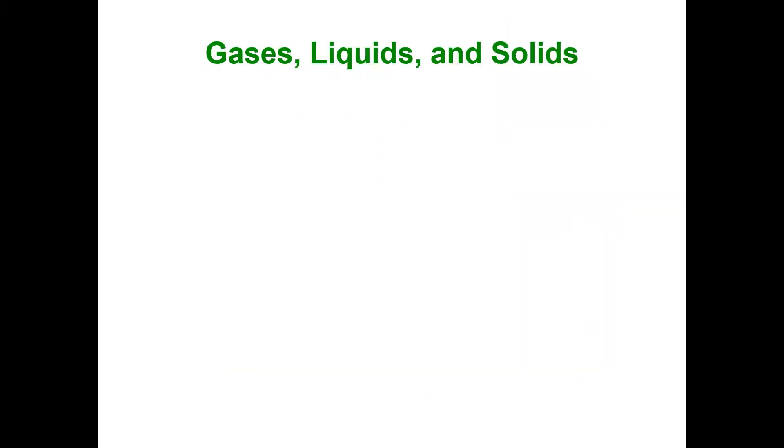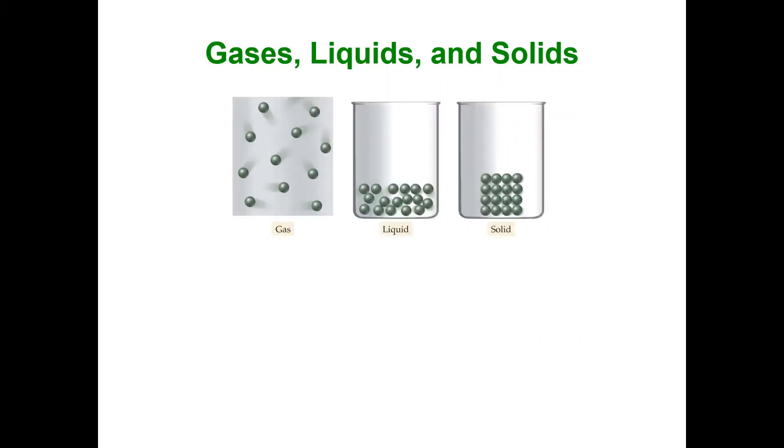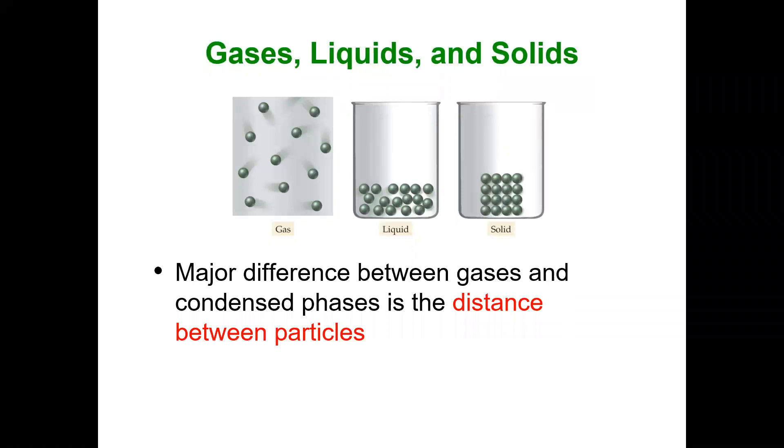So what is the difference between gases, liquids, and solids, and why are they found the way they are? The major difference between gases and the other two phases, the liquid and solid, which I'm referring to as condensed phases, is the distance between the particles.